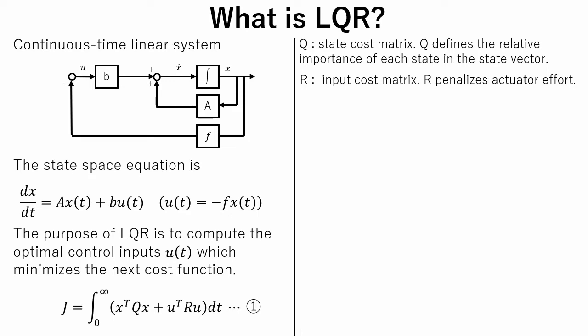R is input cost matrix. R penalizes actuator effort. Choosing a large value for R means trying to stabilize the system with less energy, and choosing a small value for R means we don't want to penalize the control signal.